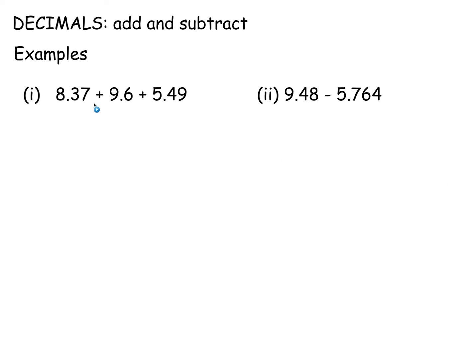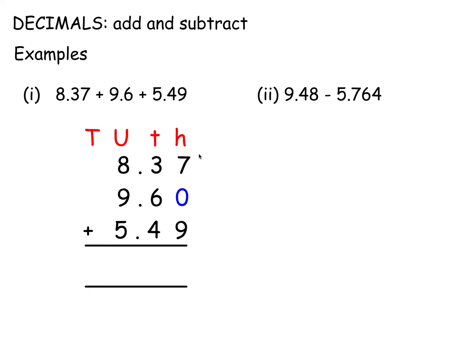Here, for example, is an addition. To add up these decimals, line them up according to place value — the units column, the tenths column, the hundredths column. This says 9.6, so we put in 9.60 just to match the other figures in the hundredths column. You just add them up as a normal sum.